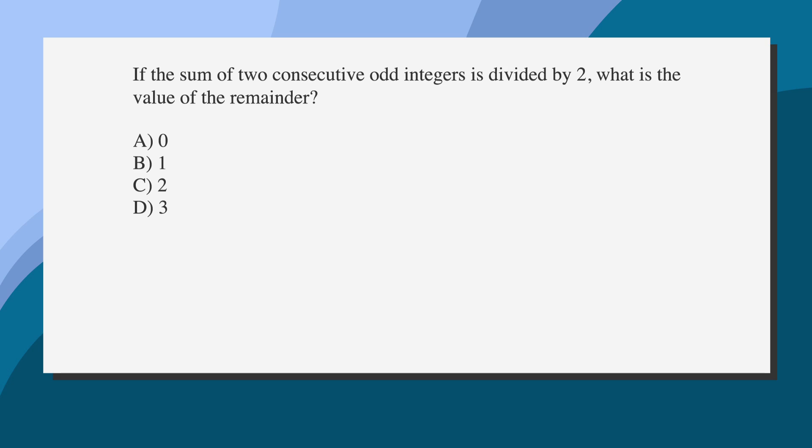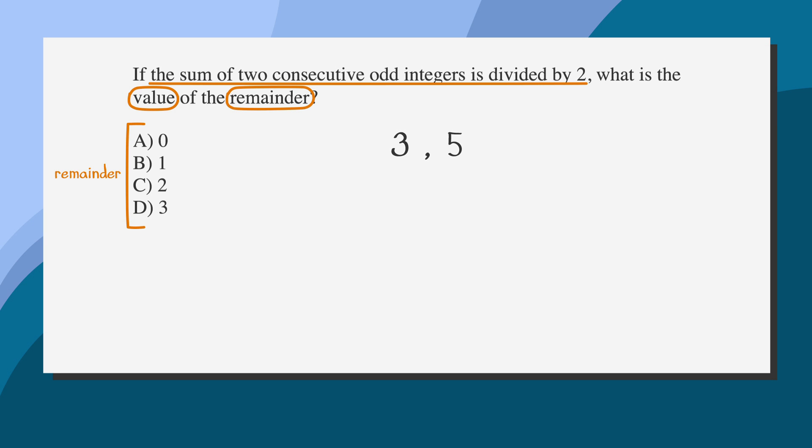Now let's look at an SAT problem that uses consecutive integers. If the sum of two consecutive odd integers is divided by 2, what is the value of the remainder? Our answer choices are all integers. We'll start by underlining the facts and circling the key terms. Finally, let's label our answer choices remainder. Now let's solve our problem by using the picking number strategy and pick two consecutive odd integers. Let's keep it simple and pick 3 and 5. Since we need the sum of our integers, we'll add 3 to 5, which gives us 8. Now we'll simply divide 8 by 2, which equals 4. Since the division came out evenly, we have a remainder of 0. So, the correct answer is A.